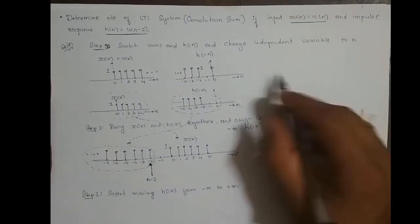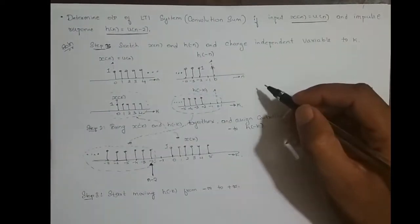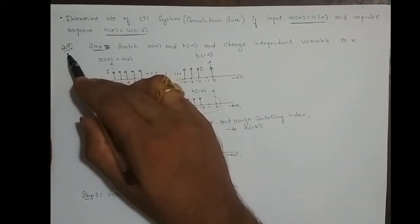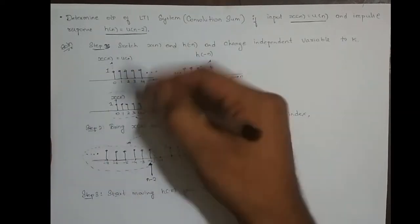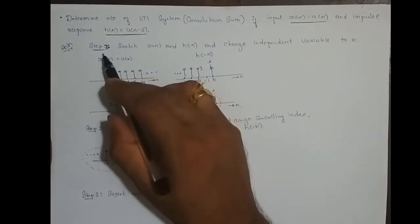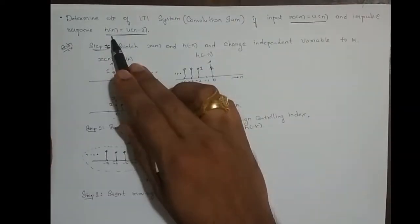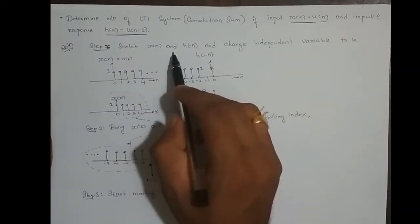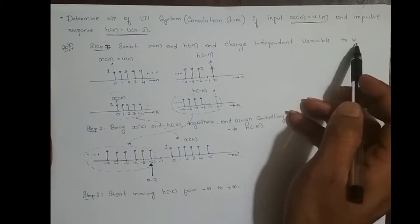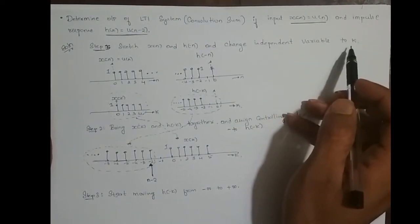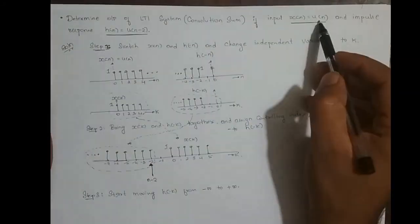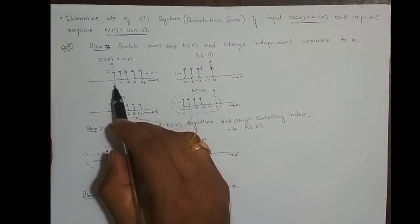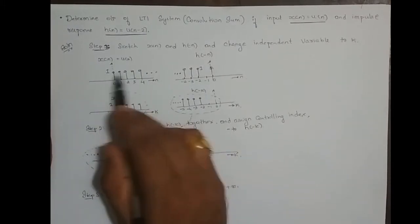I have done some initial work to save time in the video. The solution goes step by step. In step one, we sketch x(n) and h(-n), and change the independent variable to k. I will explain why we need to change the independent variable to k. x(n) is u(n), the unit step function, which varies from n=0 to infinity with amplitude 1.